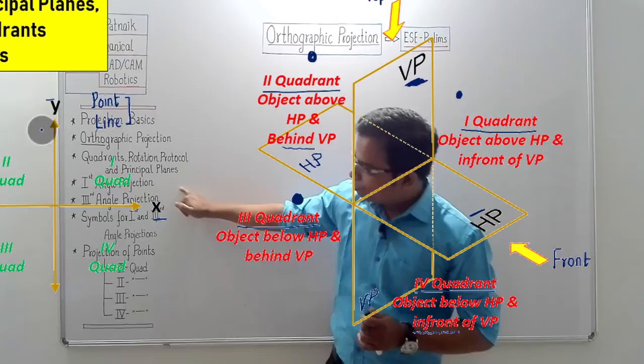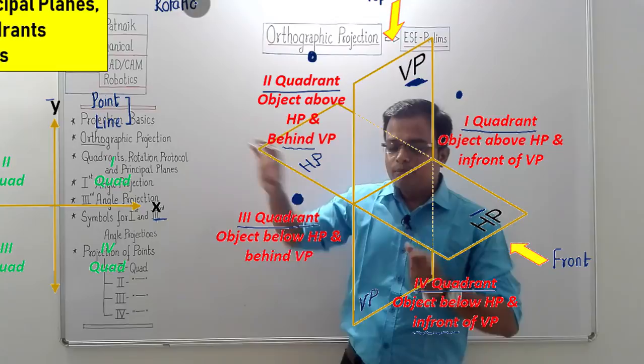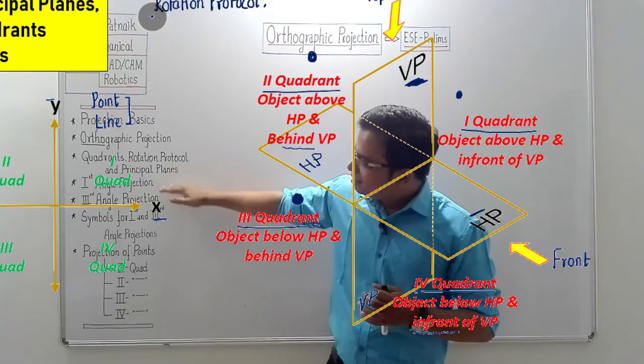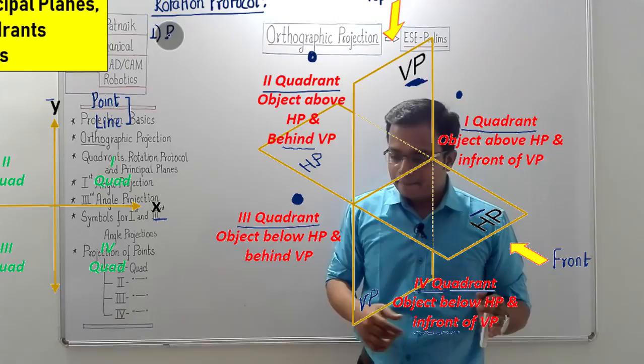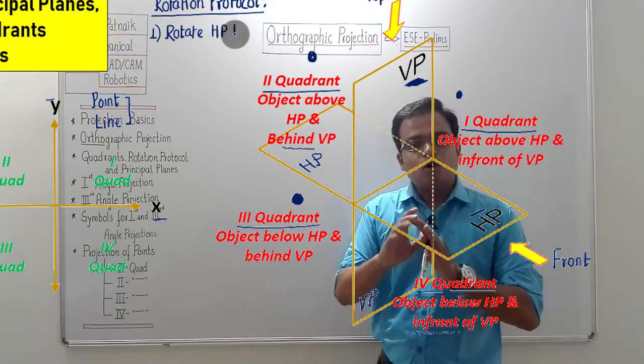Now let me tell you about the rotation protocol, which is closely associated with first angle projection and third angle projection. This protocol has to be followed for all four quadrants, but in general we usually go for first and third angle projection. I'll explain why later in the video — and some of you may already know the reason why first and third angle projections are followed across the entire globe.